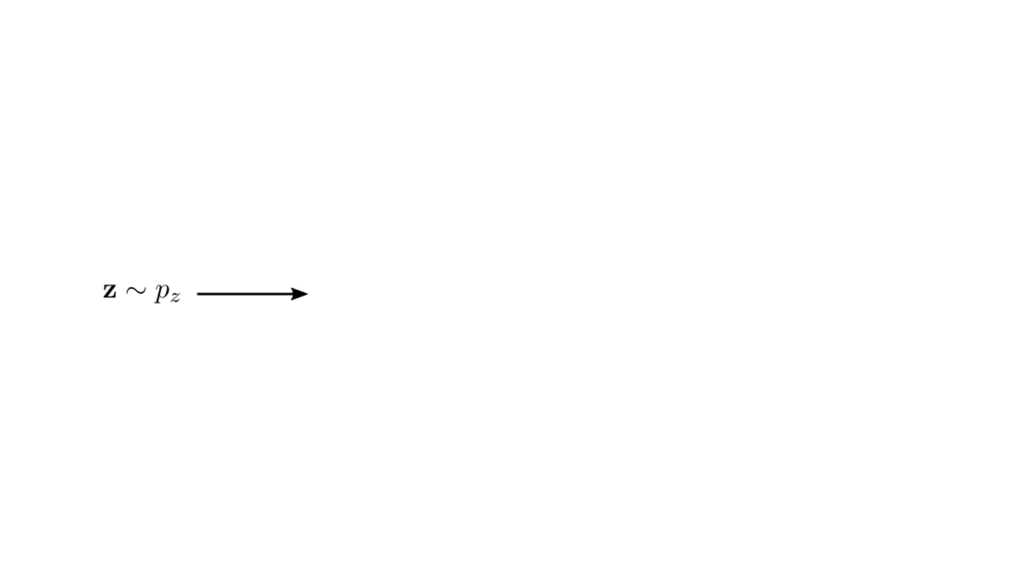In the default setup for 2D-based GANs, you start off by sampling a latent code Z from your prior distribution PZ. Next, you feed this latent code to your generator Theta.